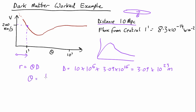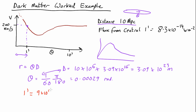Theta is 1 arcminute. An arcminute is 1/60th of a degree, and we convert it into radians by multiplying by pi over 180, which gives 0.00029 radians. Multiplying that by the distance, we find that 1 arcminute at this distance corresponds to 9 times 10 to the 19 meters, which is 2.9 kiloparsecs. So our galaxy is about 10 kiloparsecs big, roughly 3 arcminutes, so this measurement at 1 arcminute is definitely well outside the galaxy's core.